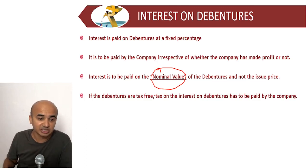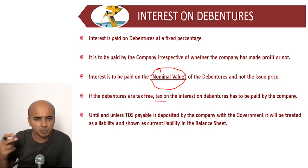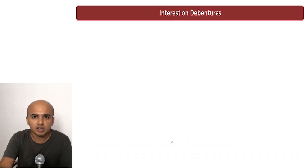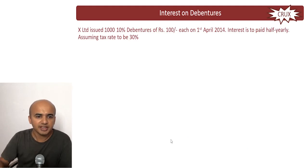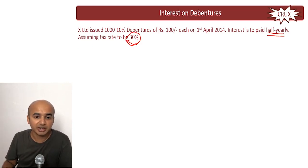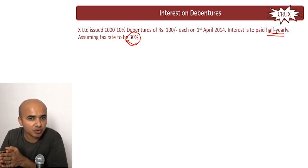If the debentures are tax-free, it is the responsibility of the company to pay the tax on interest on such debentures. Until the TDS payable is deposited with the government, it will be treated as a current liability in the balance sheet. The company deducts TDS on the interest and must deposit it with the central government; if not paid, it remains a current liability. Let us look at an example: X Limited issued 1,000 ten percent debentures of rupees 100 each on 1st April 2004. Interest is to be paid half-yearly, and the tax rate is 30%, so the company must deduct TDS at 30% and deposit it with the central government on behalf of debenture holders.